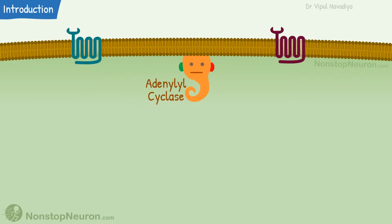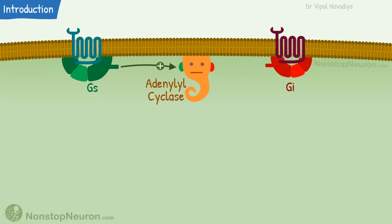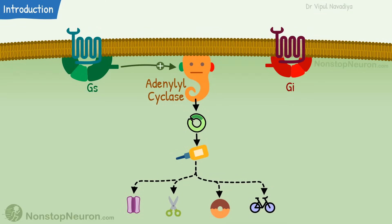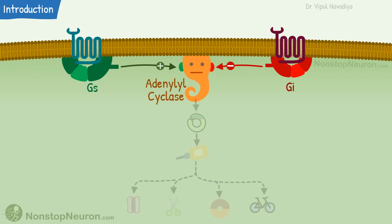In the video on G-protein coupled receptors, we have seen that two important types of G proteins are Gs and Gi. Adenylyl cyclase is affected by these two proteins. Gs stimulates adenylyl cyclase and thereby stimulates the pathway, while Gi inhibits the pathway. Generally speaking, stimulation of Gs-coupled receptors leads to an increase in the activity of the cell, and stimulation of Gi-coupled receptors leads to a decrease in activity.